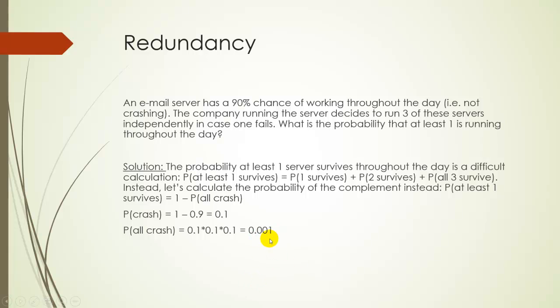Since there's a 0.001 chance that they all crash, there'd be a 1 minus 0.001 chance that at least one of them survives. Again, the way we set it up, 1 minus the probability they all crash would be the probability of at least one surviving. So that's a 0.999 chance or a 99.9% chance that at least one of them survives. And this is why airplanes have more than one engine and email servers have more than one server, is to decrease the chance that they all crash.